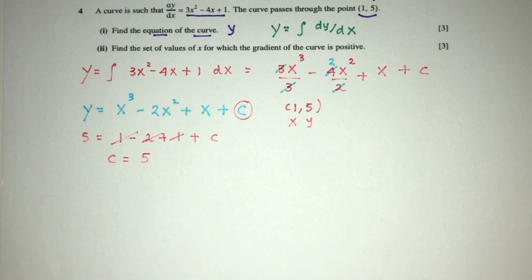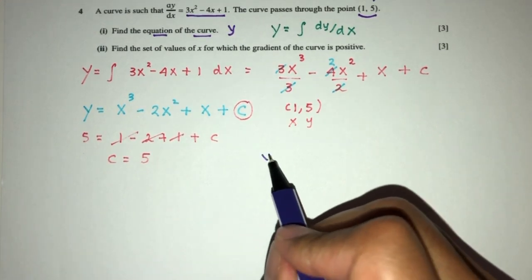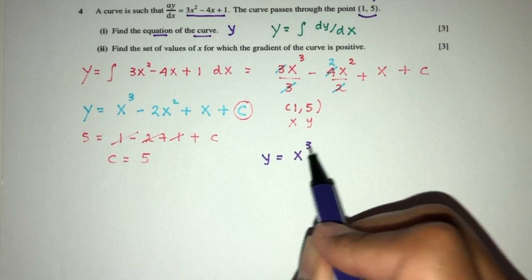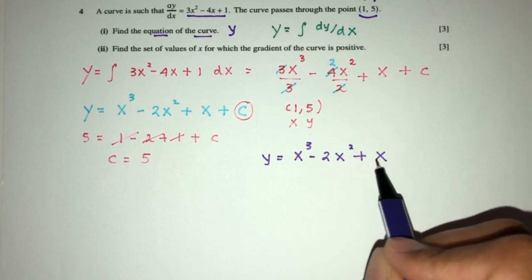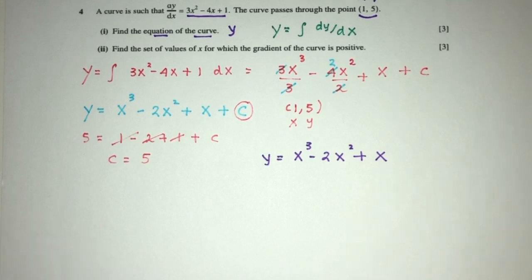So we conclude that the value of y, which is your equation, is going to be x power 3 minus 2x squared plus x plus 5. This is part 1 of the question.